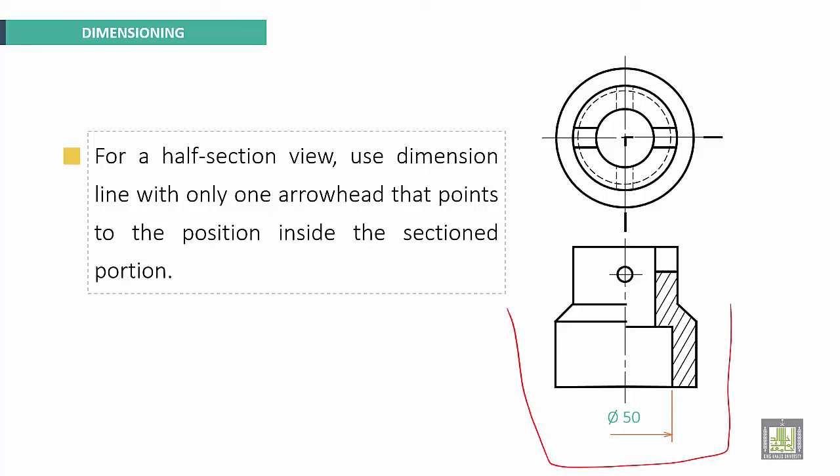So if we want to make dimensions for this internal diameter, we will use only one arrowhead to put the diameter. It is clear. Here we have Ø50.